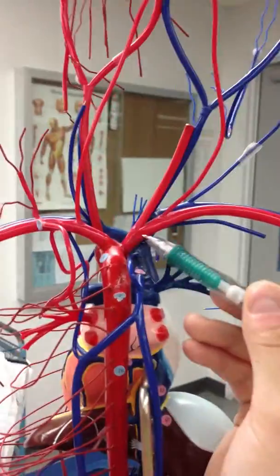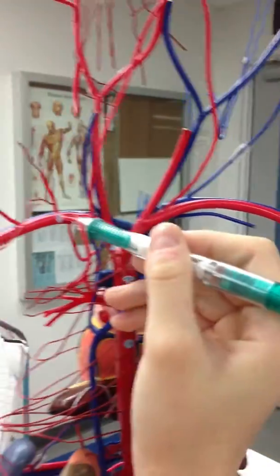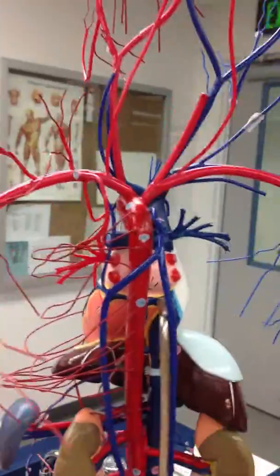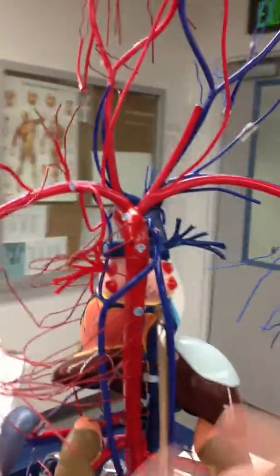The brachiocephalic artery is right here, it branches into the subclavian artery. Common carotid arteries are in the neck.